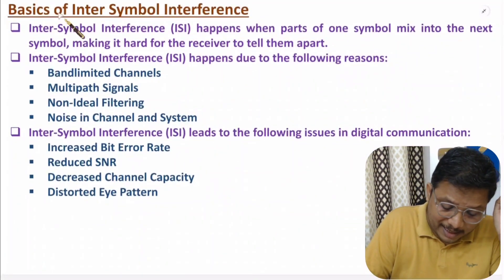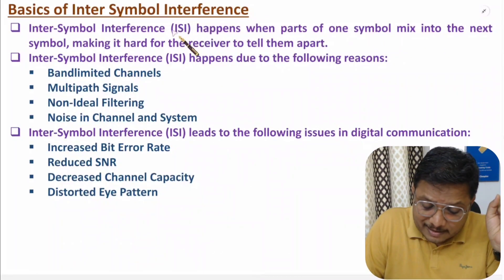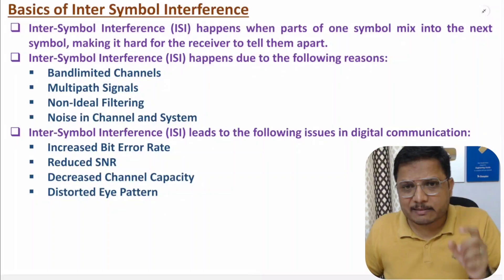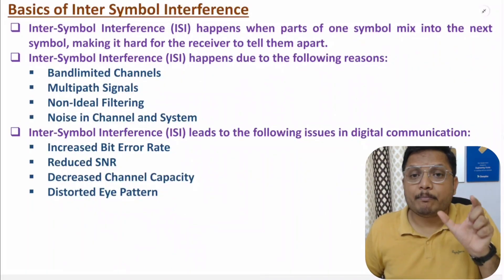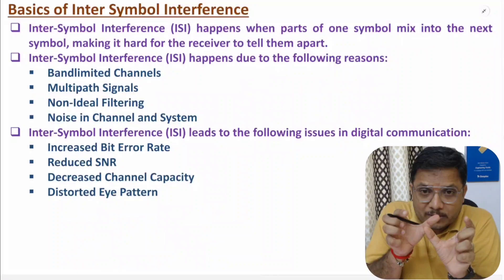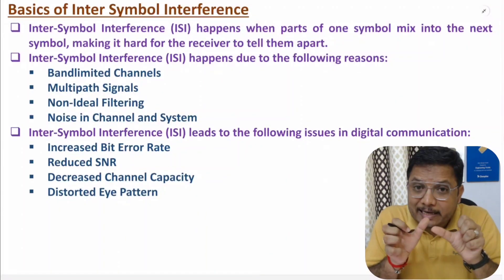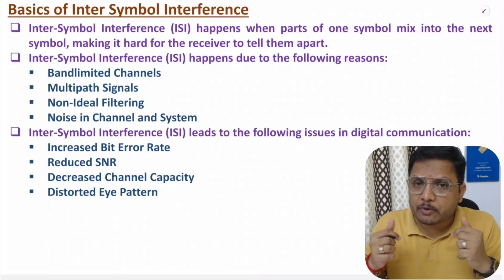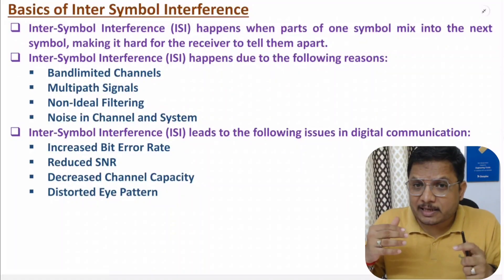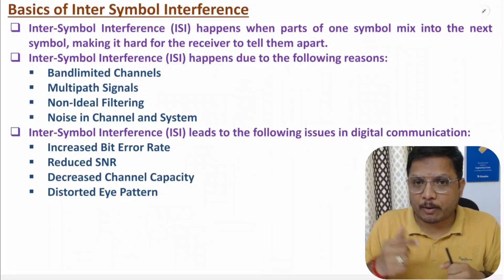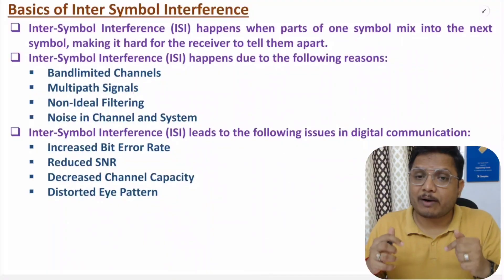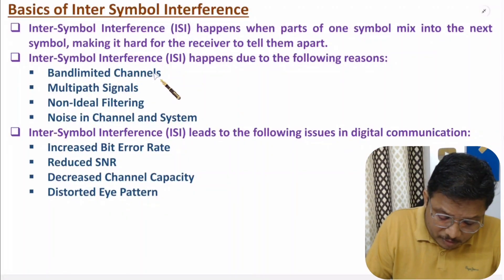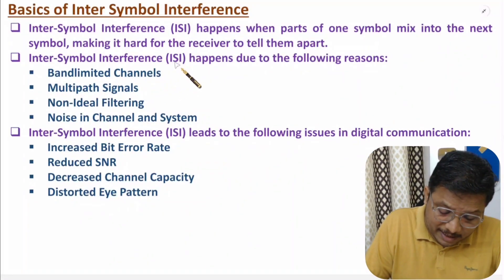ISI happens when part of one symbol mixes into the next symbol. Due to ISI, a digital receiver may not be able to receive data properly. The first reason for ISI is a band-limited channel — due to limitations of bandwidth within the channel, there can be inter-symbol interference.